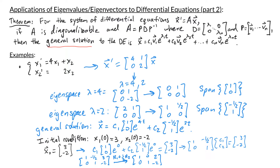Row reducing — doing row 1 plus 1/2 row 2 — we get 1, 0, 2 and 0, 1, negative 2. So c1 equals 2 and c2 equals negative 2. Our particular solution is x equals 2 times (1, 0) e to the 4t minus 2 times (negative 1/2, 1) e to the 2t.